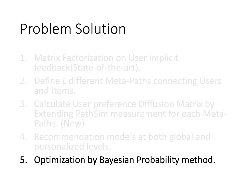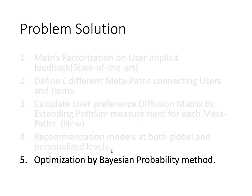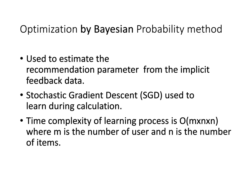Finally, they optimize using a Bayesian probability method. This is used to estimate recommendation parameters from implicit feedback data. Stochastic gradient descent is used during learning, and the time complexity of the learning process is O(mn²), where m is the number of users and n is the number of items.